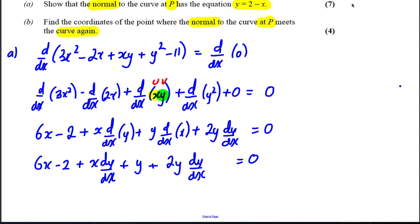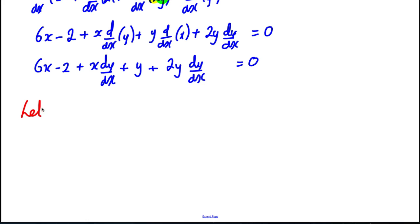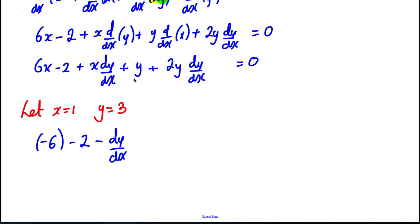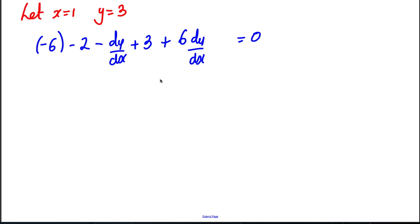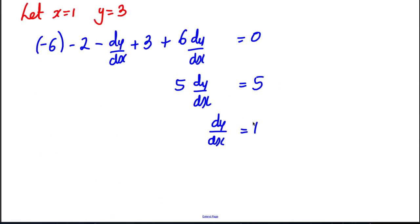At this point it's easier to substitute in x = -1 and y = 3. So: 6(-1) = -6, minus 2, then plus x·(dy/dx) gives minus 1·(dy/dx), plus y which is 3, plus 2 times y which gives 6·(dy/dx), all equal to zero. Collecting dy/dx terms: 5·(dy/dx), and the constants: -6 - 2 + 3 = -5. Adding 5 to both sides gives dy/dx = 1.